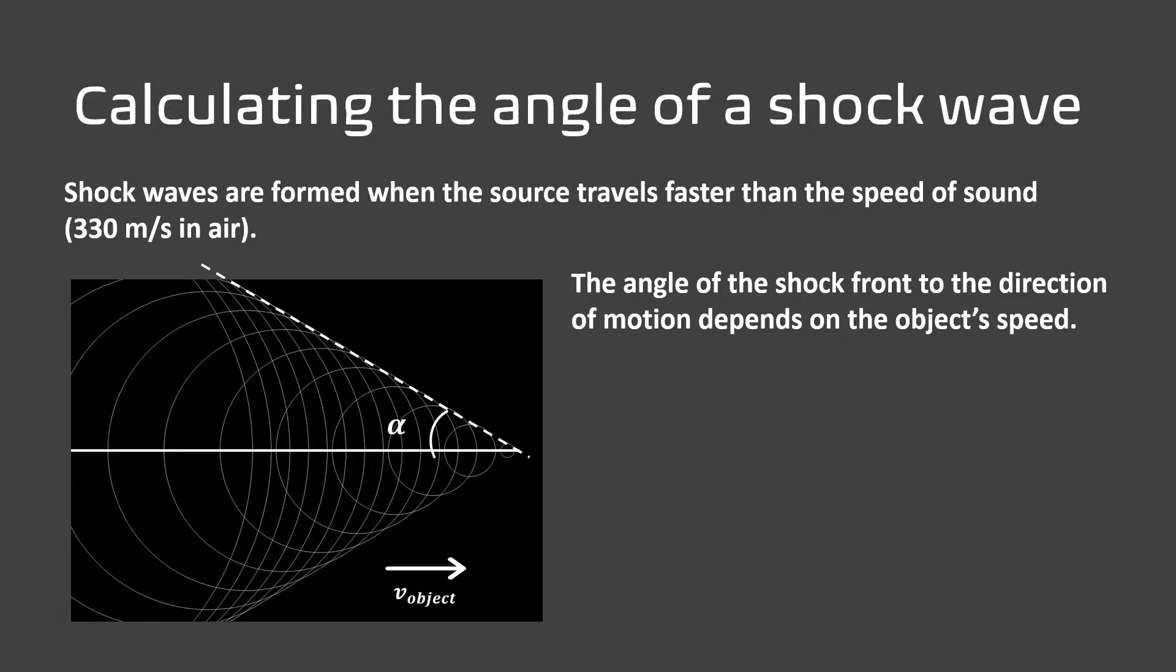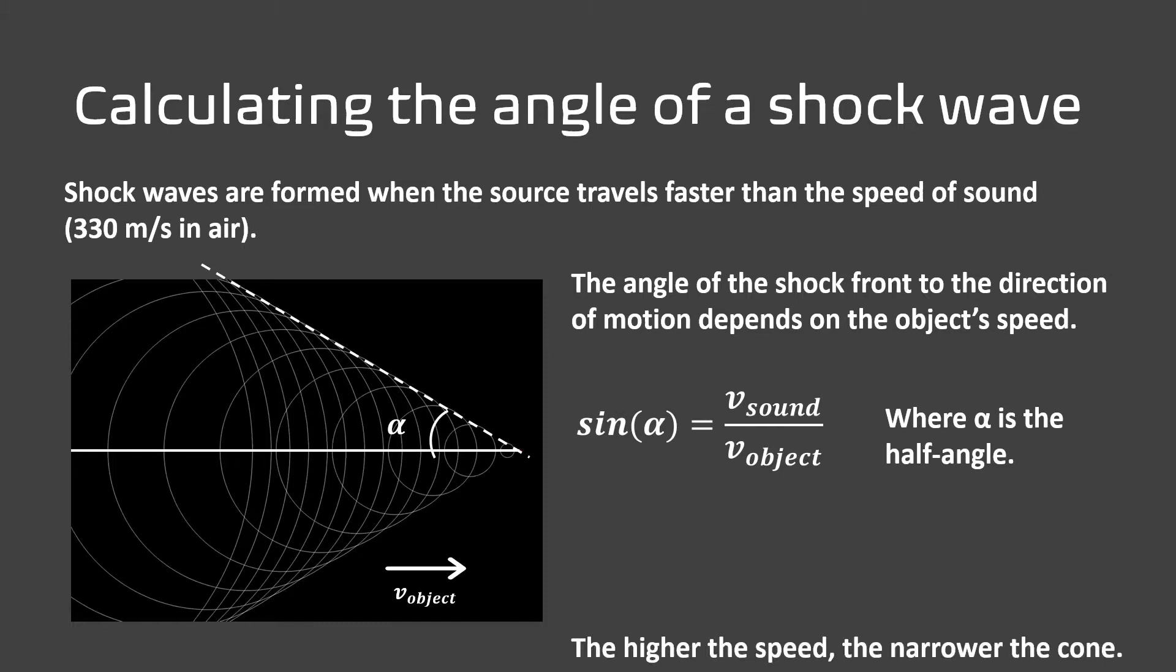If the object travels at speed v_object, the half angle alpha can be calculated as sin alpha equals the speed of sound divided by the speed of the object. The higher the speed, the narrower the cone.